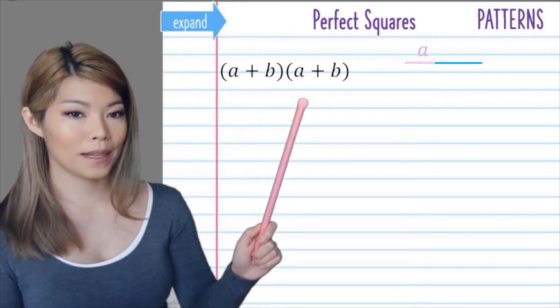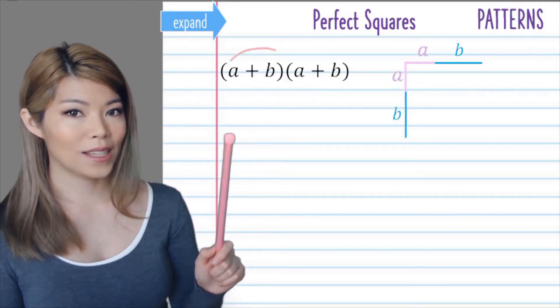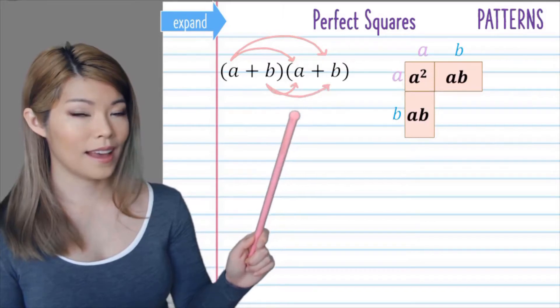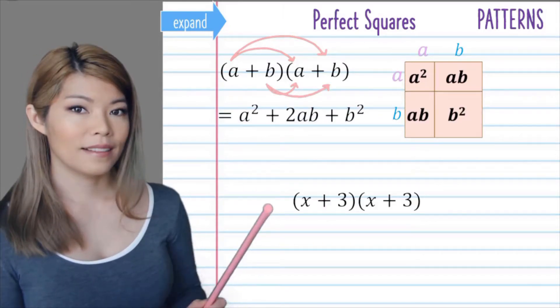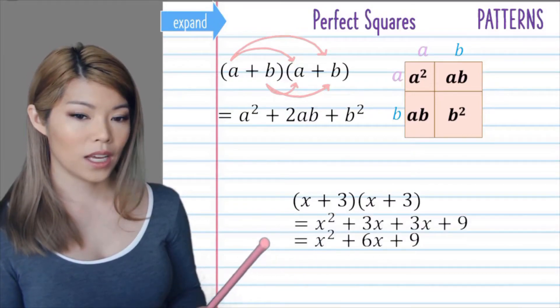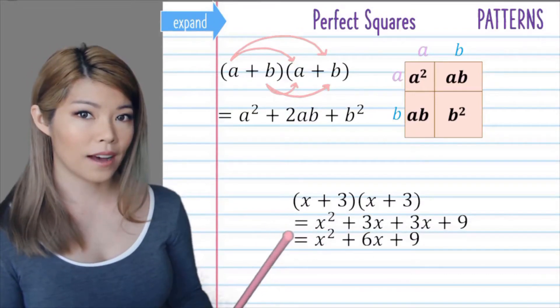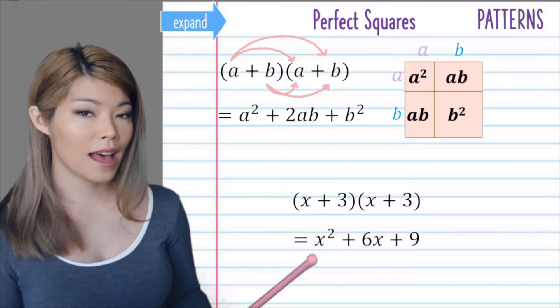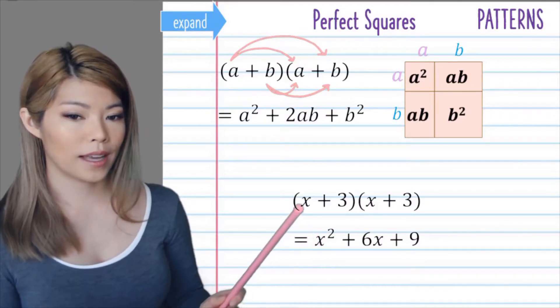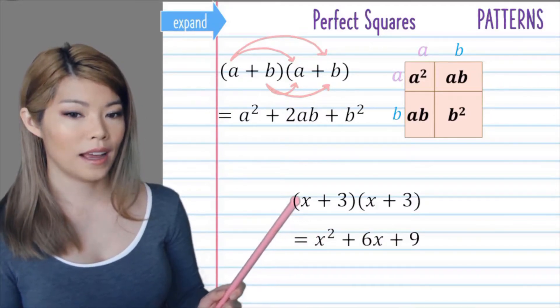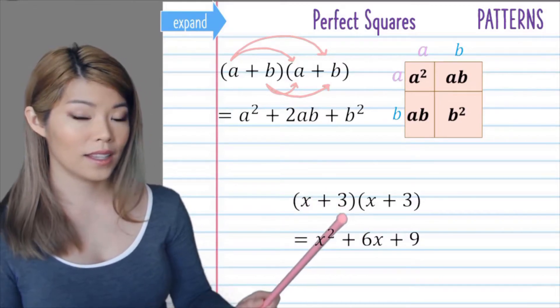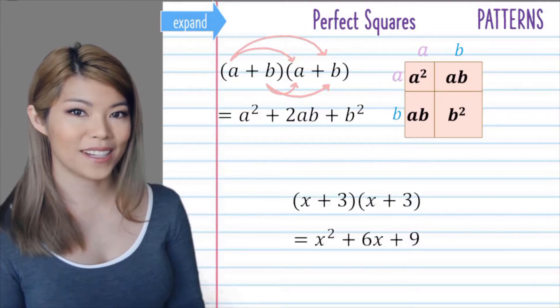Let's write this out using pronumerals so we have a formula to memorize. So a plus b times a plus b would be a squared plus 2ab plus b squared. So whenever you get questions like x plus 3 times x plus 3, you no longer have to write all that working out. You can simply go to the last line, x squared plus 6x plus 9. And you do that by doing x squared and then 2 times x times 3, which is 6x, and then squaring the last term, 3 squared, which is 9.